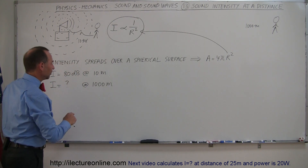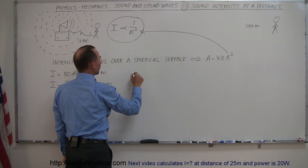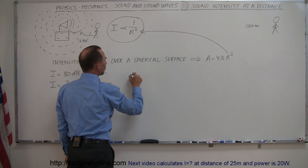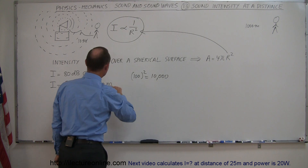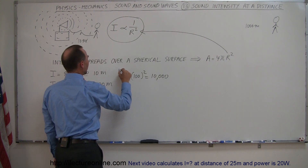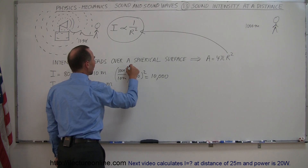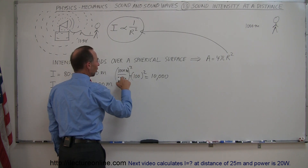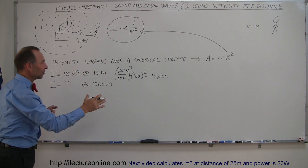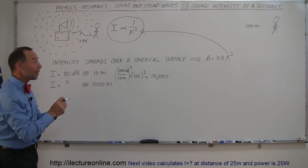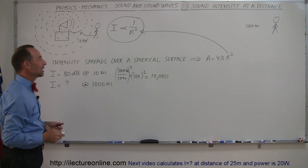If you're now 100 times as far away — distance is 100 times farther — you square that and get 10,000. We take the ratio of 1,000 meters divided by 10 meters, square that ratio to get 100 squared, which equals 10,000. That means 100 times as far away the sound will only be 1/10,000 as loud.